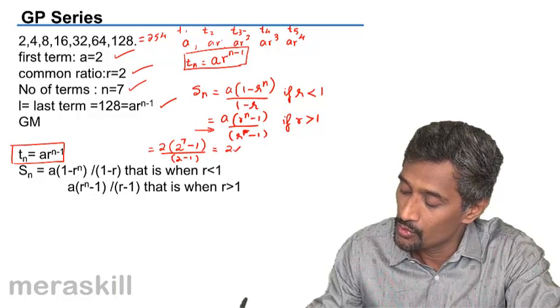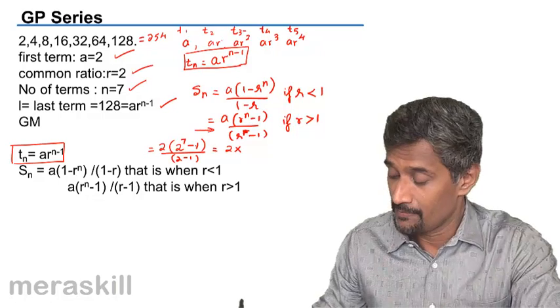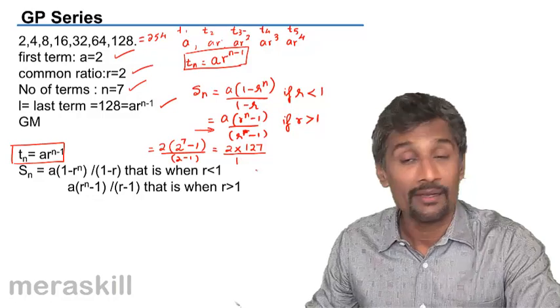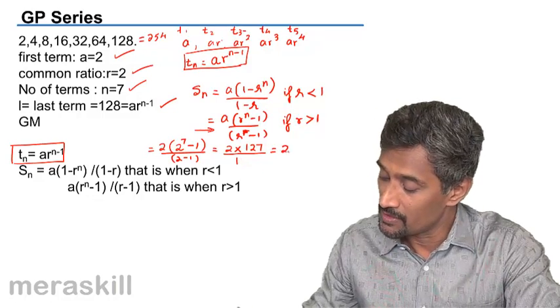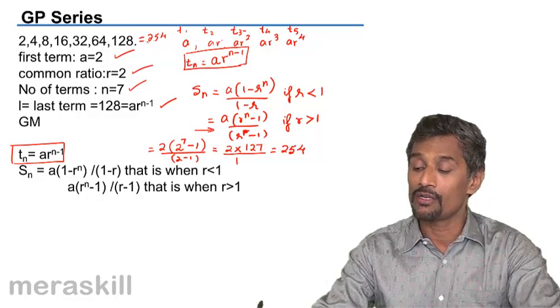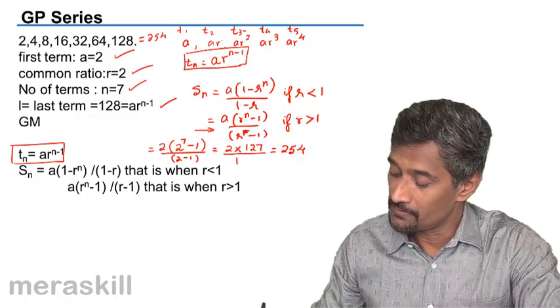This equals 2 into (2 raised to 7, which is 128, minus 1), equals 2 into 127 upon 1, which equals 254. This matches what we got by actually adding the terms, which was also 254.